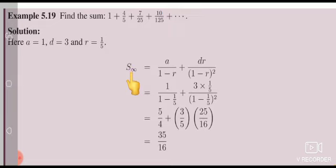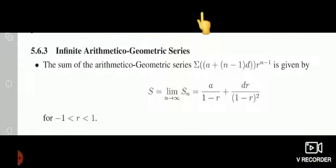Here, sum of infinity because plus etc., infinite arithmetico-geometric series. This is the formula: S equals limit n tends to infinity, Sn equals a/(1-r) plus dr/(1-r)²,